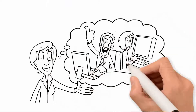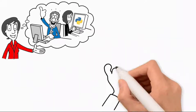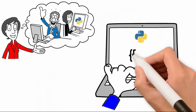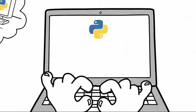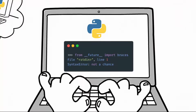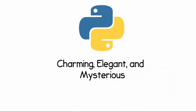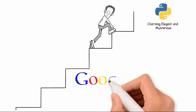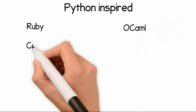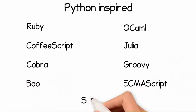Even though Python inspired the development of many other programming languages such as JavaScript and C++, it has distinctive features — for example, Python doesn't use braces to delimit code blocks. Indentation is mandatory with Python, and attempting to import from the __future__ package brings up a witty syntax error that says 'not a chance.' Python is considered a charming, elegant, and mysterious programming language. It has inspired other coding languages such as Ruby, OCaml, CoffeeScript, Julia, Cobra, Groovy, Boo, ECMAScript, and Swift/Go.